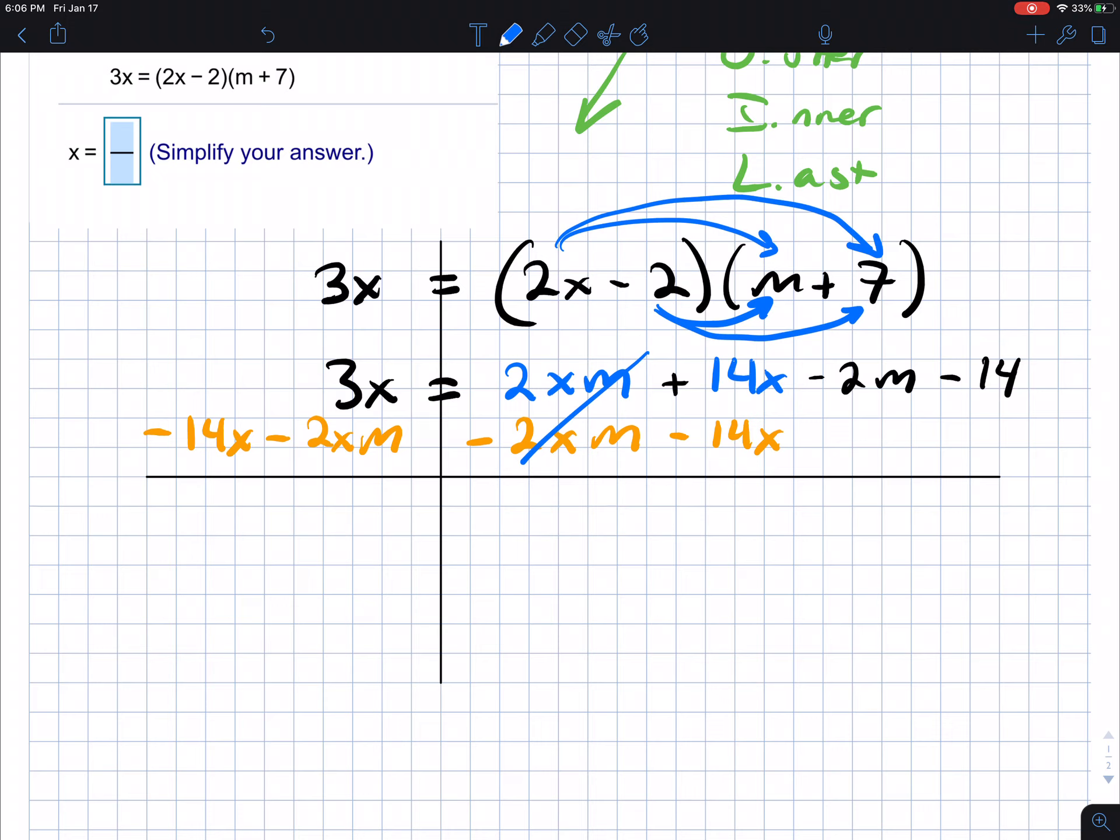A number plus its opposite goes to zero. On the left, we want to do our best to combine like terms. So we actually do have a couple of like terms. The negative 14x plus 3x should give us a negative 11x minus 2xm. The equal sign comes down. Those are zero. On the right-hand side, we're left with negative 2m minus 14.